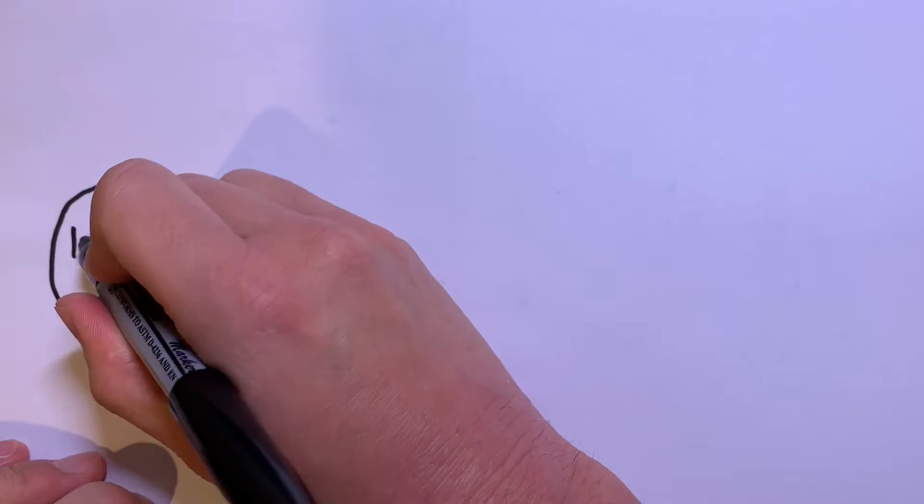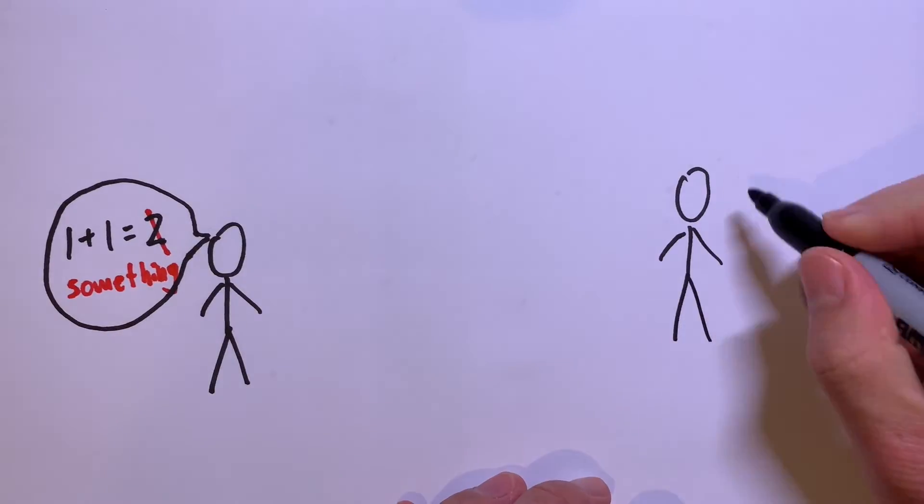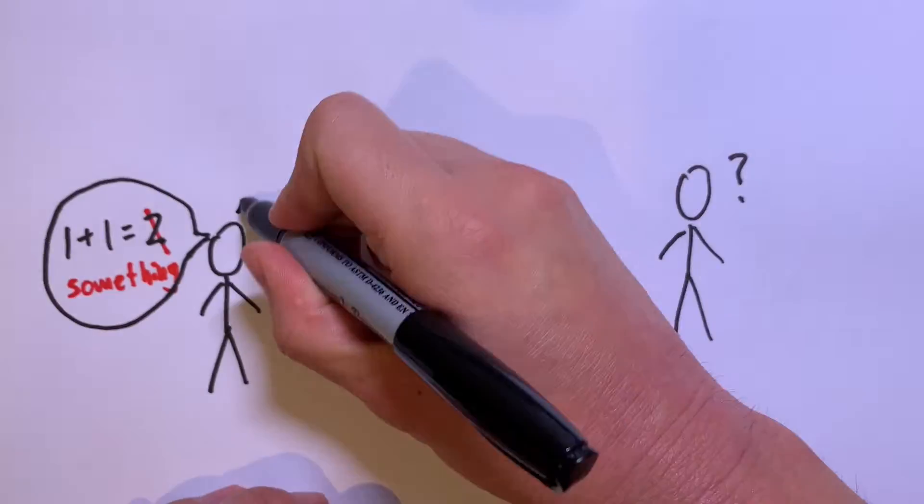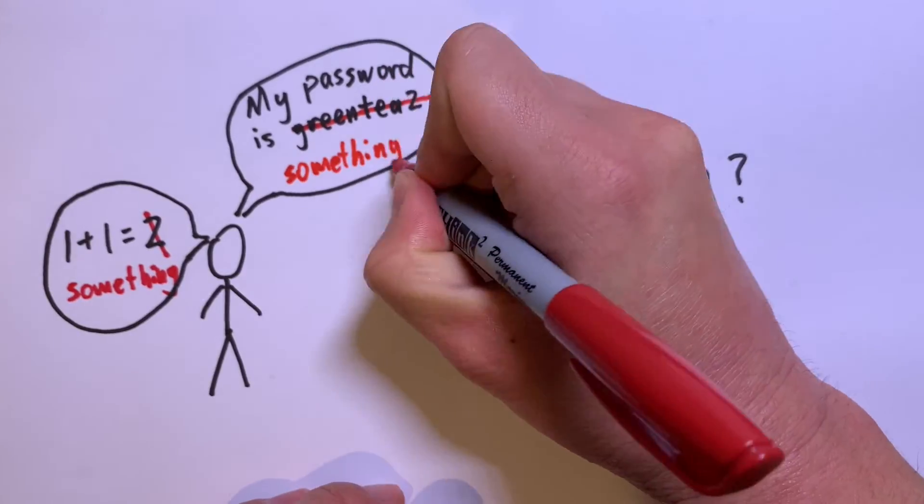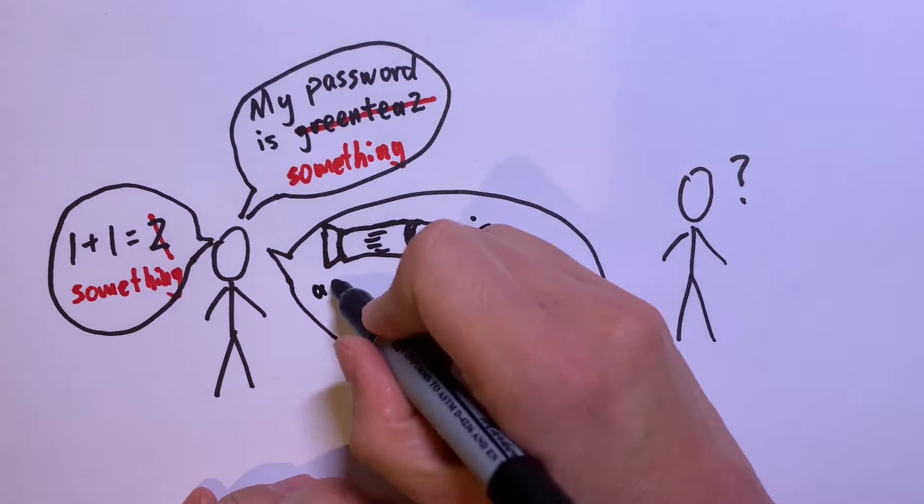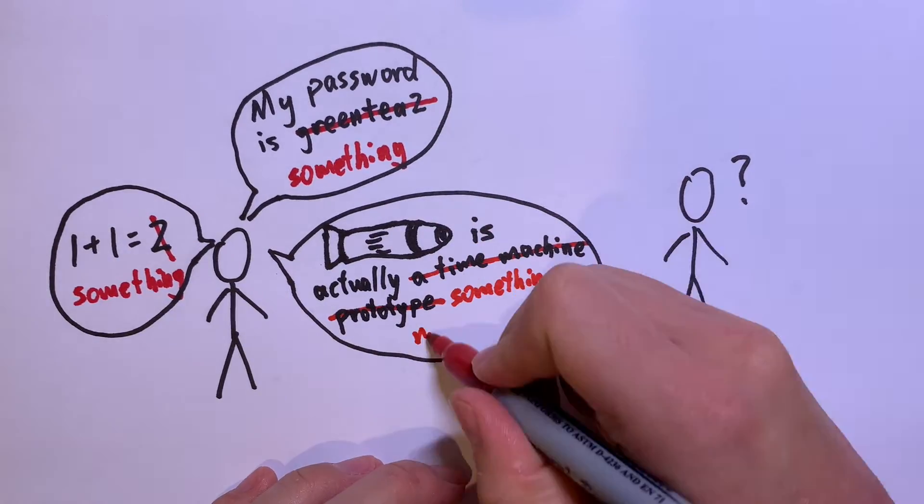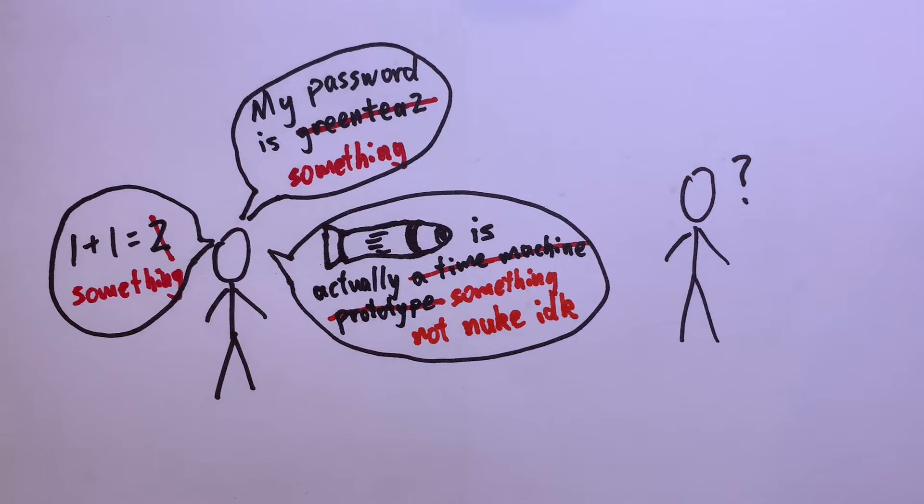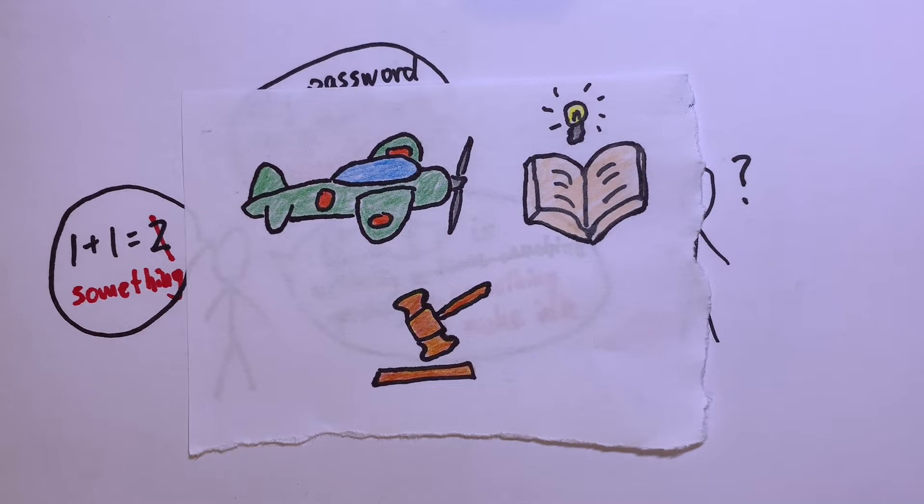Can you convince someone you know how to solve a puzzle without telling them the answer? Log into your bank account security without providing your password? Or prove that you're dismantling your nuclear weapons without revealing any government secrets? It may seem crazy, but these things are not only possible, but actually quite easy. Enter zero-knowledge proofs.